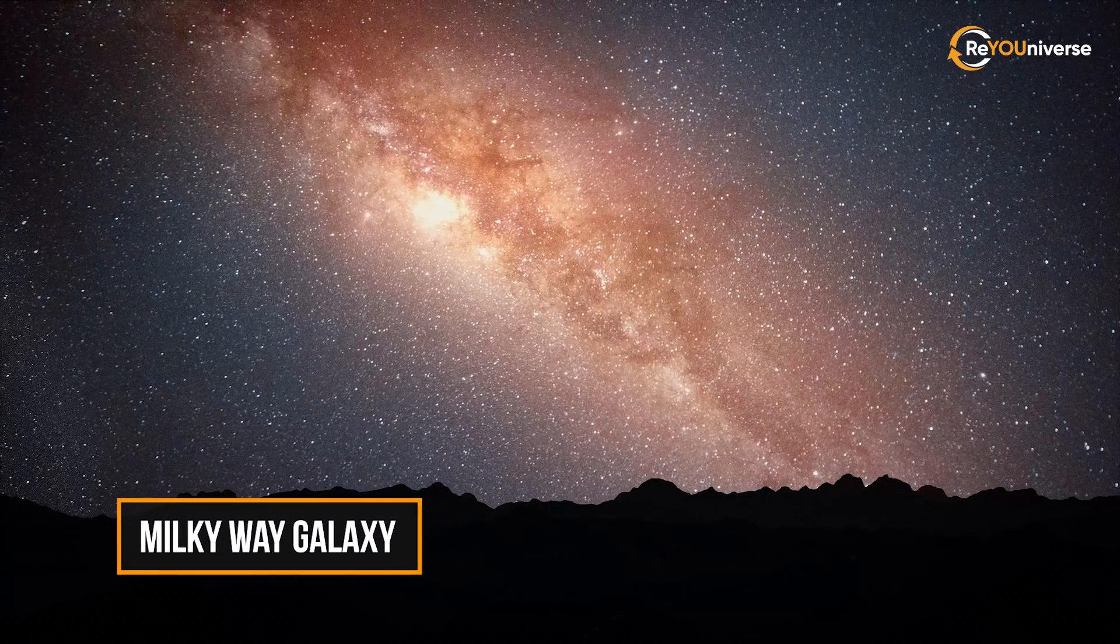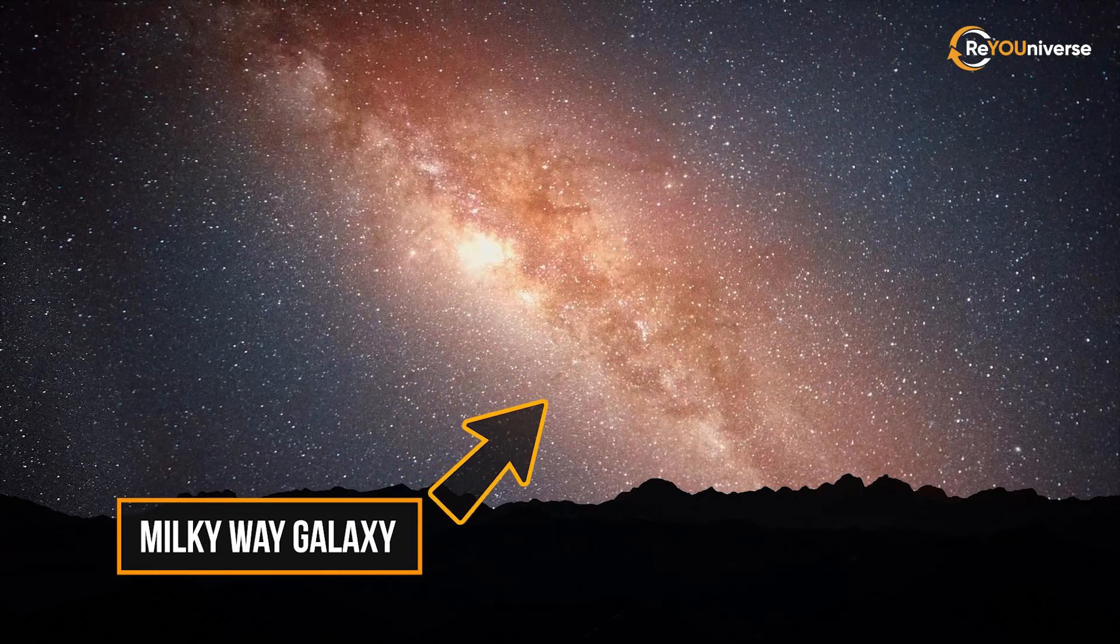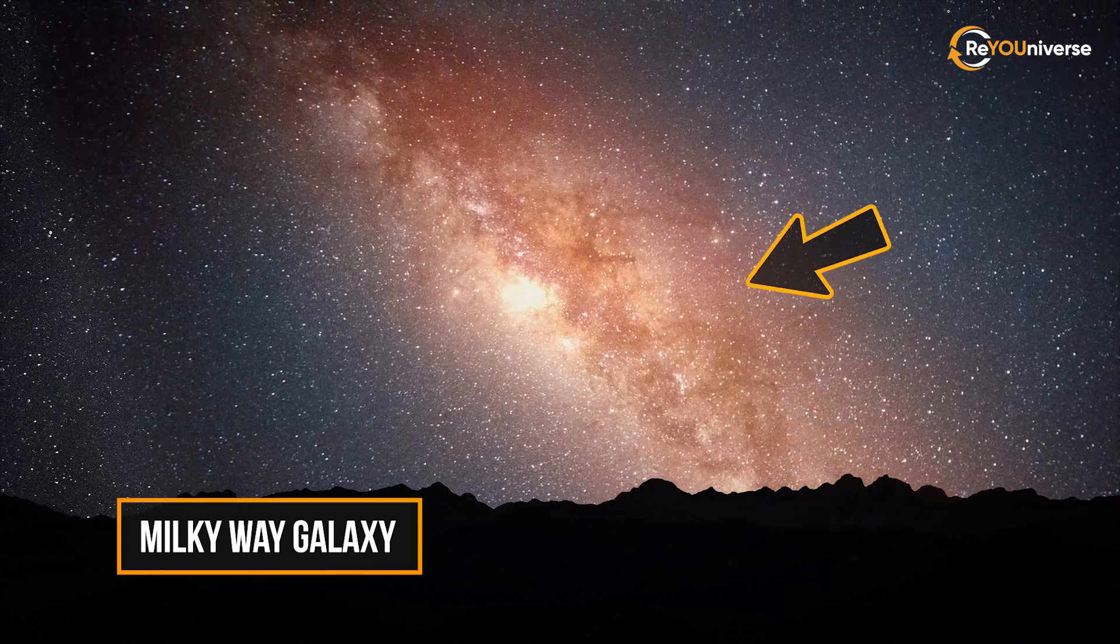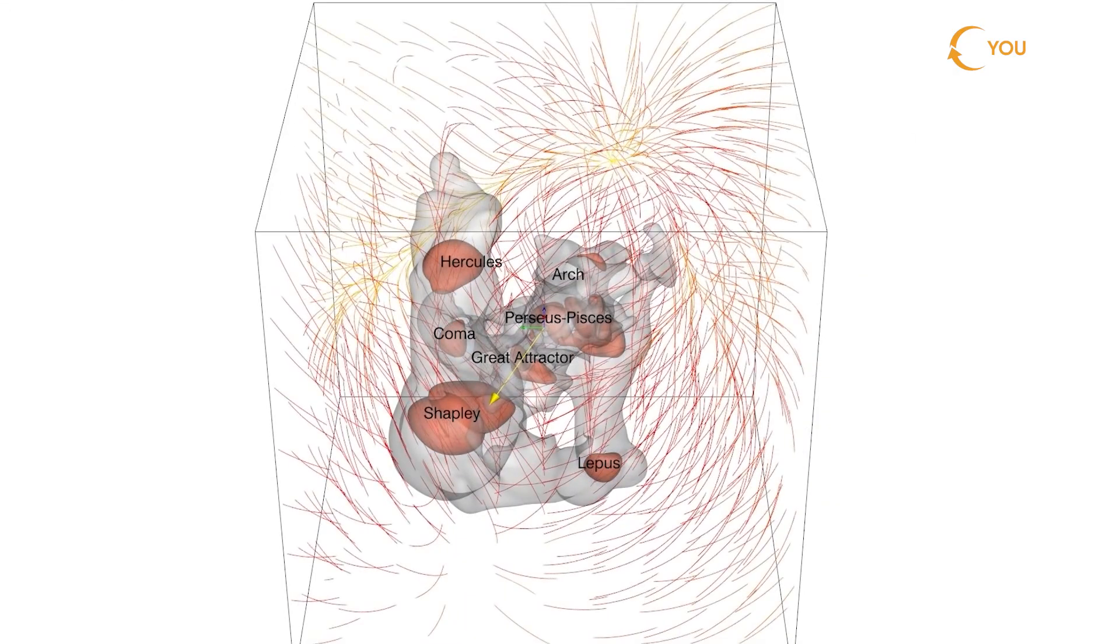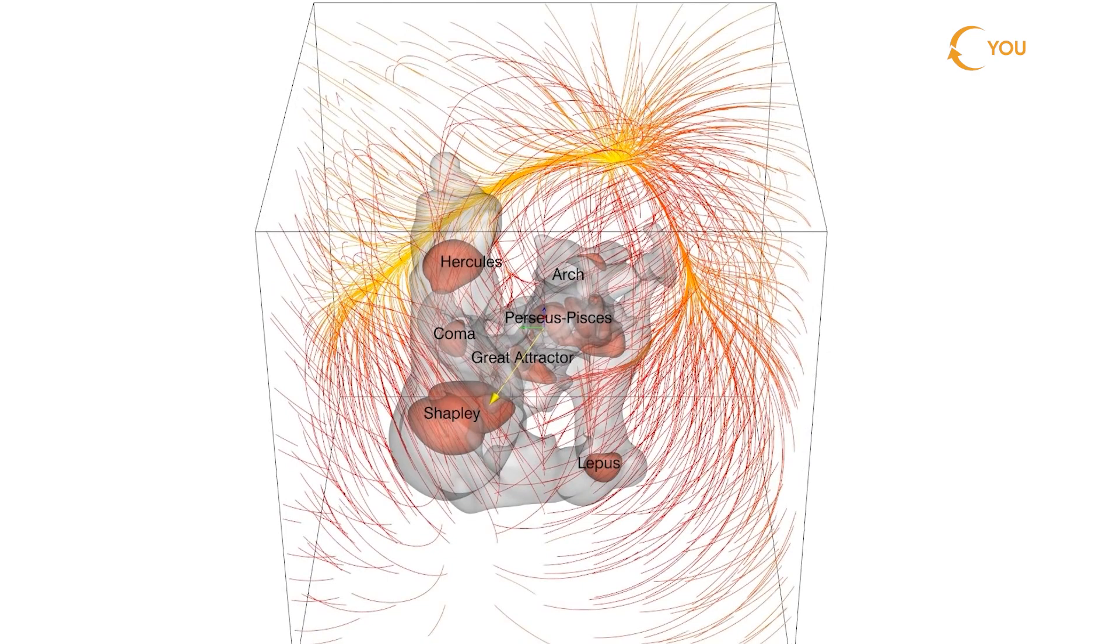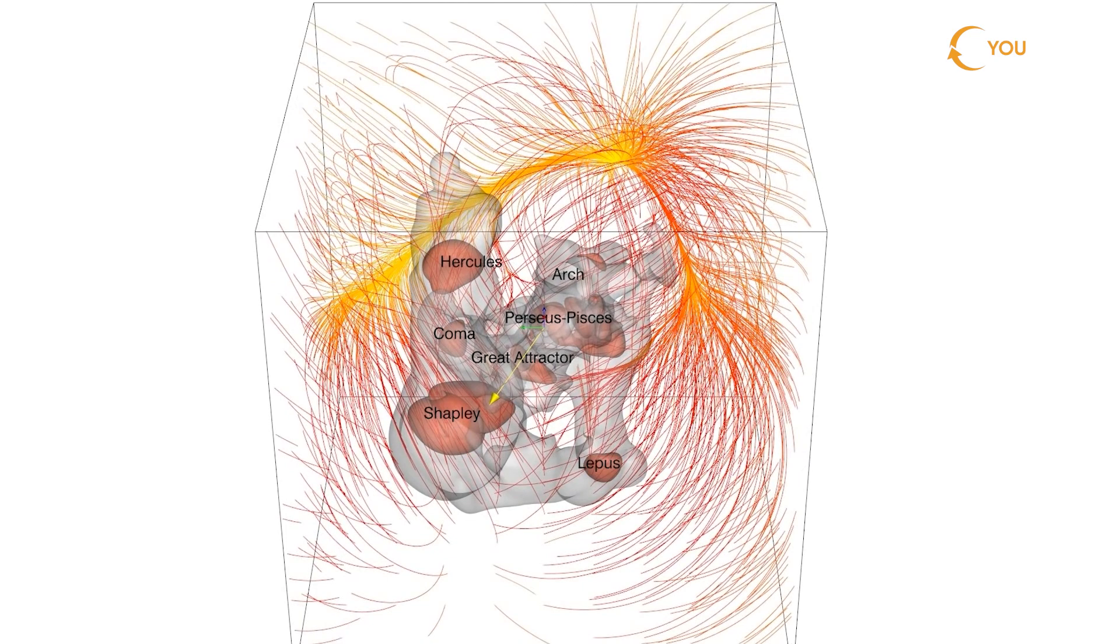We can't see it due to the specific location of our galaxy. Our galactic disk obstructs our view. But today, we're interested not in the attractor itself, but the eerie, empty space in front of it. Dipole repeller.